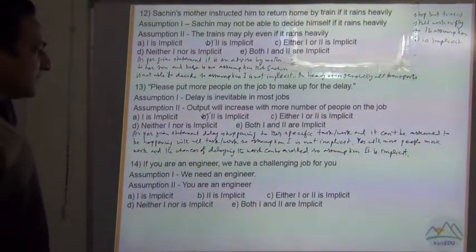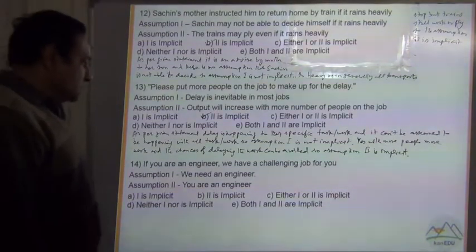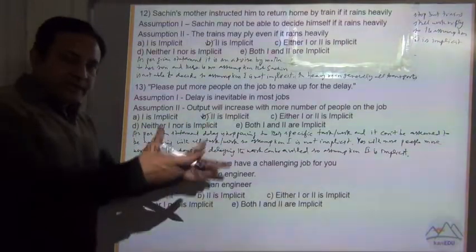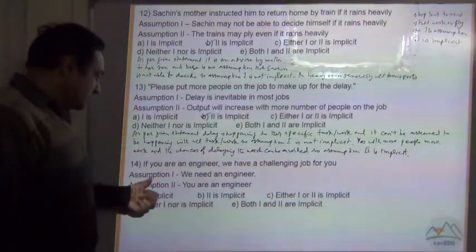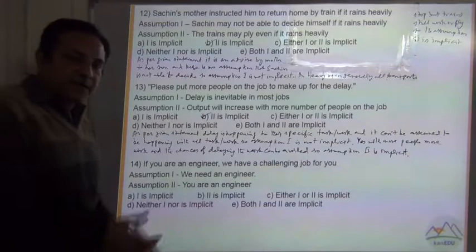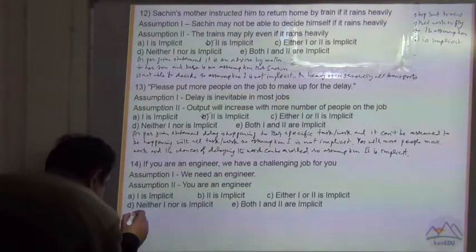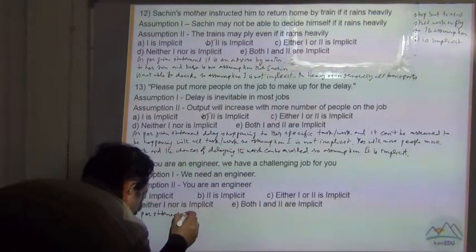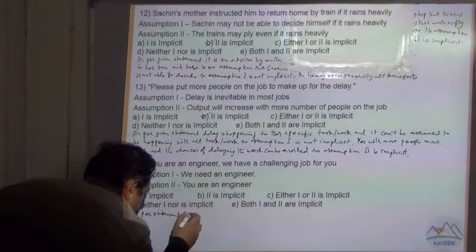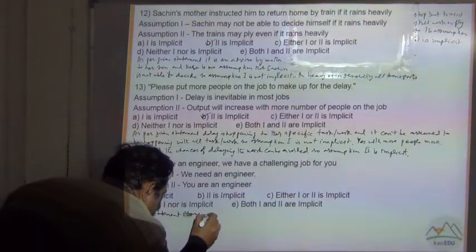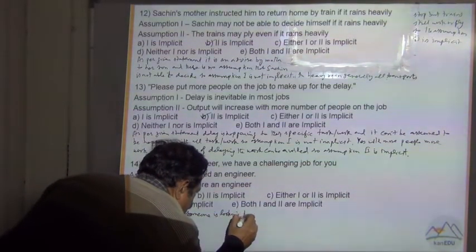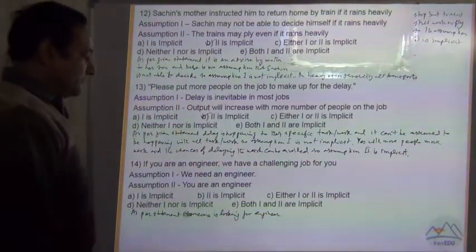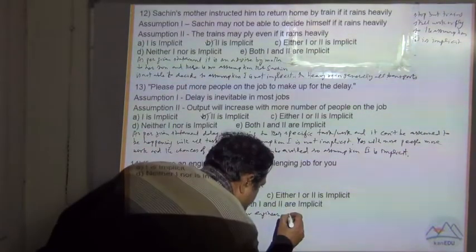Question number 14. If you are an engineer, we have a challenging job for you. So someone is looking for engineer. That's why he is asking to the other person, if you are an engineer, we have a work for you. So assumption 1: we need an engineer. Definitely. As per statement, they are looking for engineer. So as per statement, someone is looking for engineer. So assumption 1 is implicit.